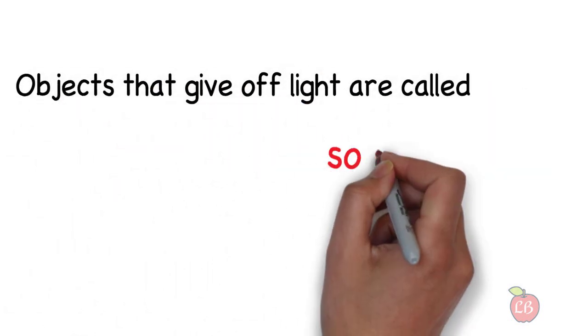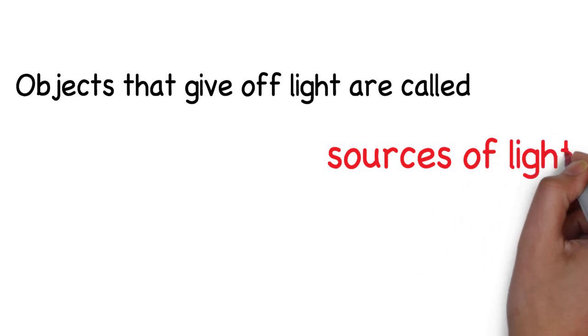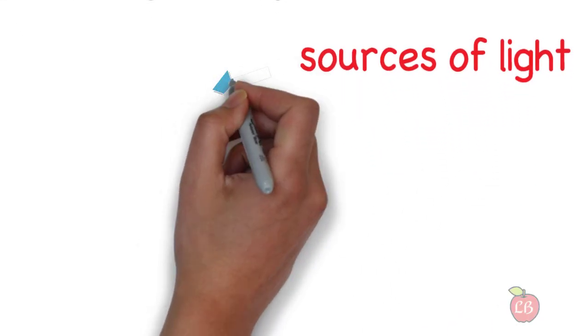Objects that give off light are called sources of light. These sources can be natural or artificial.